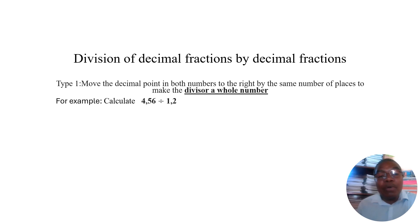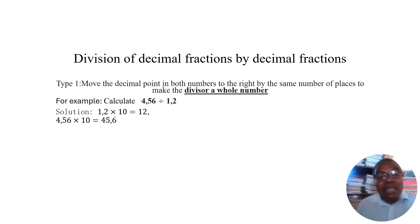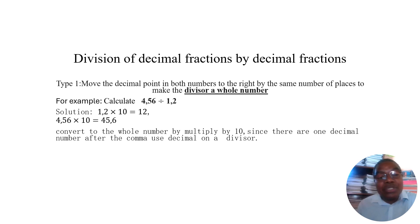For example, calculate 4.56 divided by 1.2. In this regard we must convert 1.2 into a whole number. Because there is only one digit after the comma, we multiply by 10: 1.2 times 10 gives us 12. The same process applied to the divisor must also be applied to the dividend. Since there is one decimal place on the divisor, we use times 10.